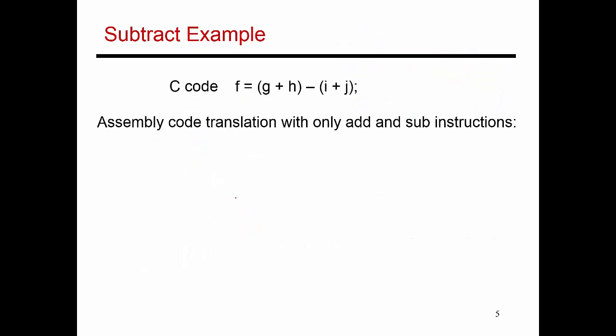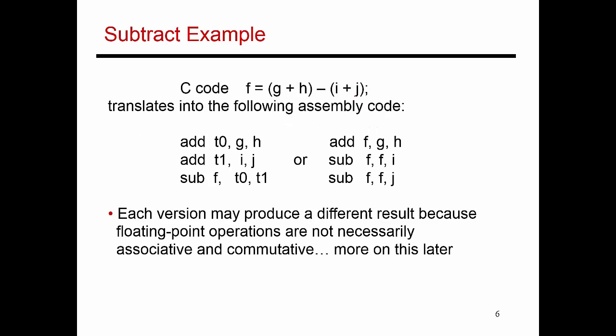All right, let's do one more example. This is another piece of C code where I'm adding G plus H and then subtracting the sum of I and J from that. If I convert this into assembly code using only my simple add and sub instructions, these are two possible options, and there are other options as well. Let's look at the first one. It takes G plus H, adds them up, and writes the result into a temporary location T0. Then it adds I and J, writes the result into a temporary location T1, and then it subtracts T1 from T0, writes the result into F. So this is a perfectly acceptable way to write this piece of code.